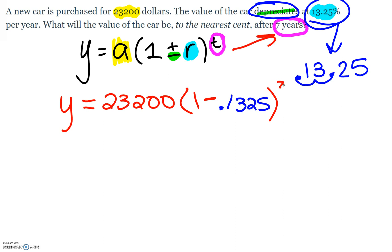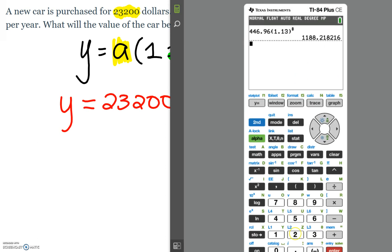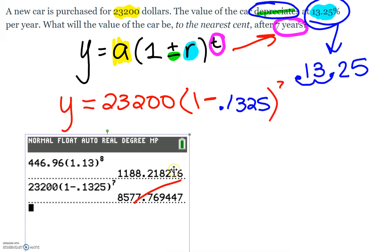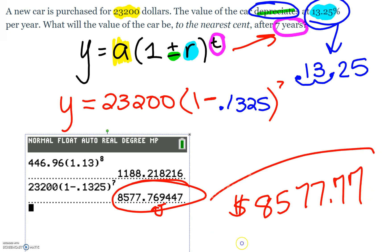And then we raise it to the t power. In this case, we want to find out for 7 years, so we're going to put the 7 as our exponent. From here, we could just type that value into our calculator as is. So we're going to type in 23,200 times 1 minus 0.1325 to the 7 power. And then from here, this would be our final answer. And then we want to round it to the nearest cent. So we look at the third decimal, and we would type in 8,577 and 77 cents, and then hit the submit button. And I hope this helped. See you later.